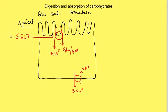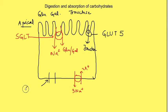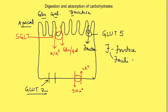Fructose moves only by facilitated diffusion via a GLUT transporter, specifically GLUT-5. Once monosaccharides enter the cell, their movement across the basolateral side occurs by facilitated diffusion via the glucose transporter GLUT-2. Transport of glucose and galactose is secondary active transport at the apical membrane and facilitated diffusion at the basolateral membrane, while fructose is facilitated diffusion at both membranes. A simple mnemonic: F for fructose, F for facilitated diffusion at both apical and basolateral membranes, and GLUT-5 — F for 5 — at the apical membrane.